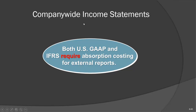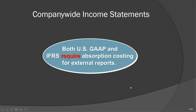Absorption costing is used for external reports. When you apply generally accepted accounting principles, it means external reports — balance sheet, income statement, statement of cash flows — all require absorption costing. Variable costing, on the other hand, is only for internal use. If you are preparing a balance sheet or income statement for external parties, use absorption costing.